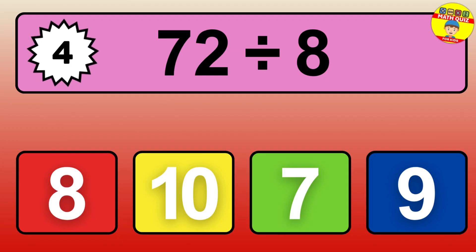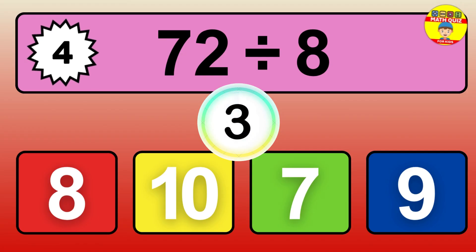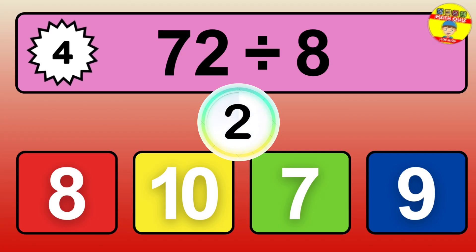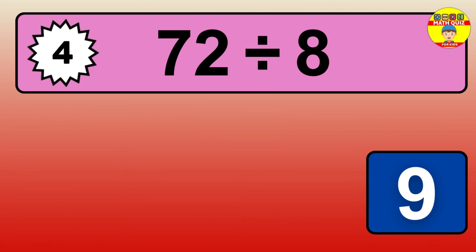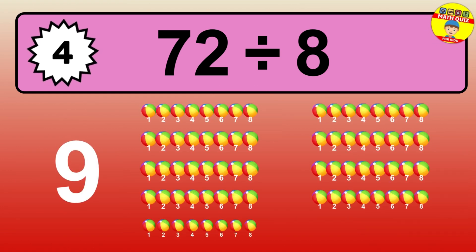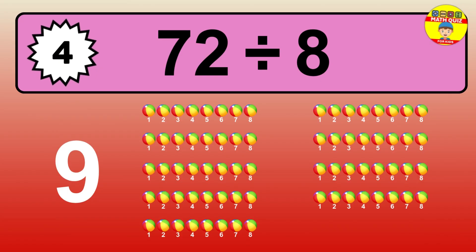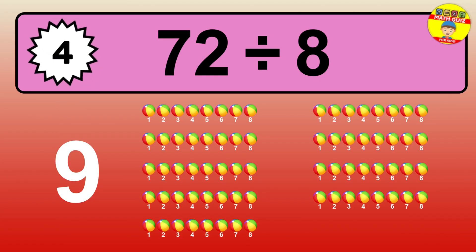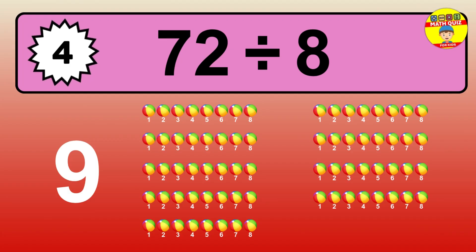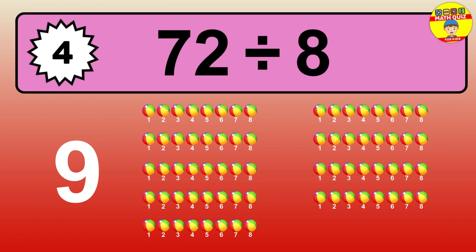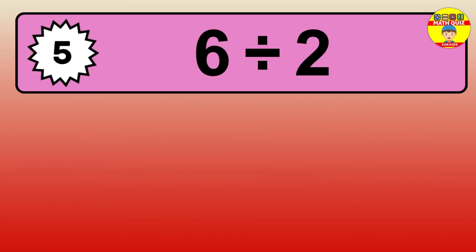What is 72 divided by 8? Imagine this: you have 72 objects to divide into groups of 8. How many groups can you make? Let's think about it. Ready to find out? Let's break it down. Let's imagine you have 72 objects — can you picture them lined up? Now think about splitting them equally into smaller groups of 8.